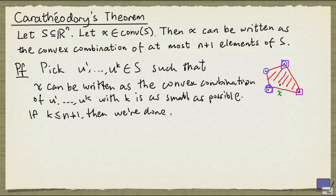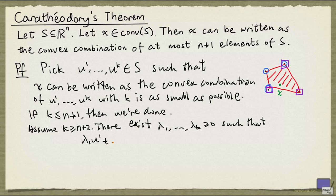So assume that k is at least n+2. Because x can be written as the convex combination of u₁ up to uₖ, there exists λ₁ up to λₖ, non-negative, such that λ₁u₁ plus all the way to λₖuₖ is x, and λ₁ plus all the way up to λₖ is equal to 1.